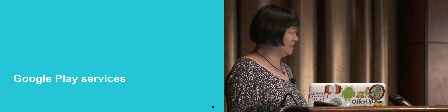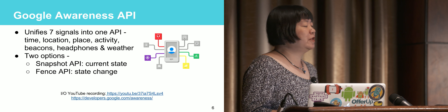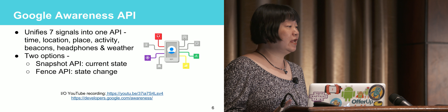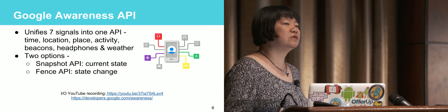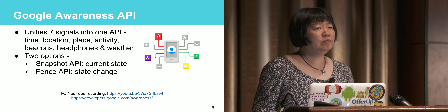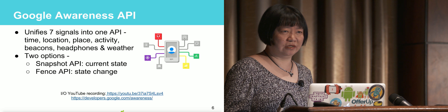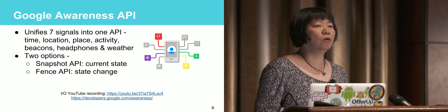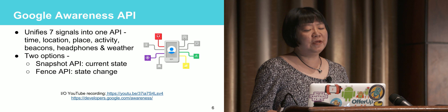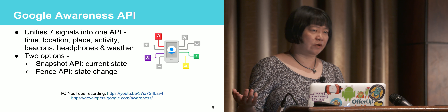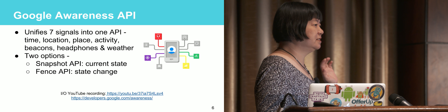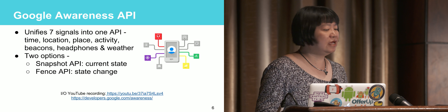Google Play Services 9.2.1 was released last month in June, and the Awareness API — announced at Google I/O — was also released with this new Google Play Services release. Activity recognition, knowing whether you're running or walking, is not new. Geofencing and detecting your location is not new. Being able to find out the weather using a web service is not new. But what is new with the Awareness API is that it packs seven signals into one API.